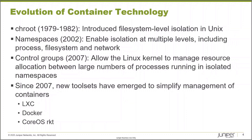A little bit about the history of containers — this really is an instance of something old becoming new again. If you follow the lineage of the modern container, you can trace it all the way back to 1979, where the chroot functionality was first developed for the Unix operating system. This introduced file system-level isolation, where different processes could have their own independent, isolated view of the file system — reading and writing without interfering with other processes. This was officially incorporated into the Unix kernel in 1982.